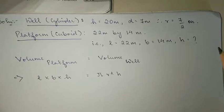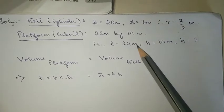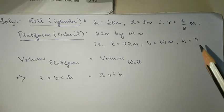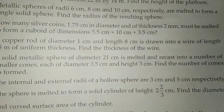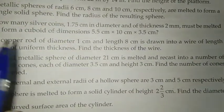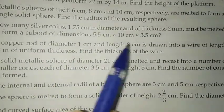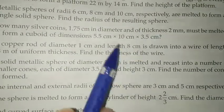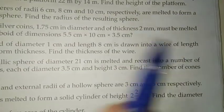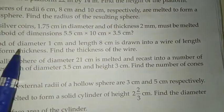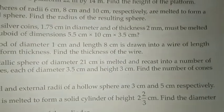You can pause the video here and copy whatever you need. Question number 10: a copper rod of diameter 1 cm and length 8 cm is drawn into a wire of length 18 meters of uniform thickness. Find the thickness of the wire.